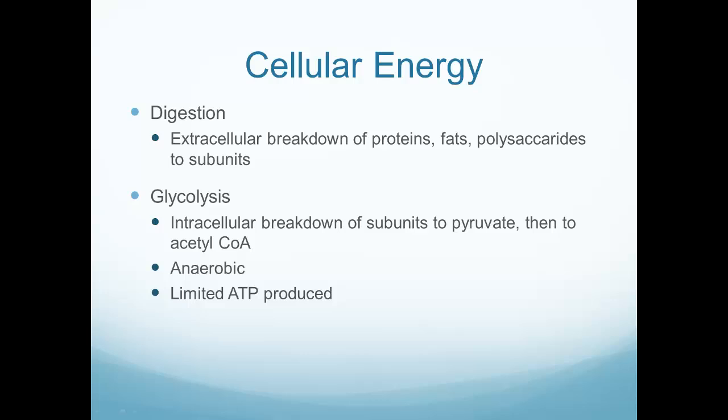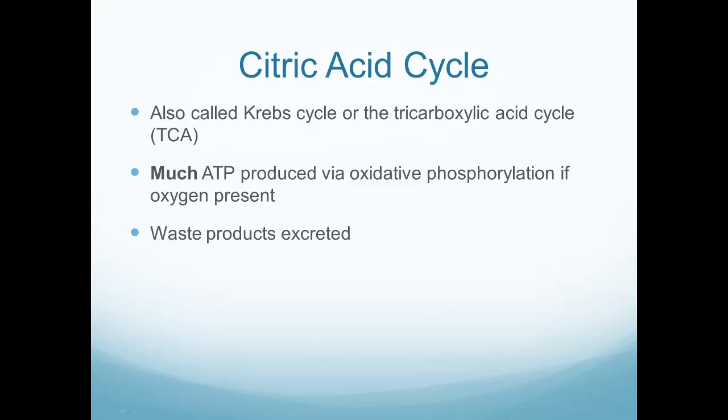Cellular energy is important for digestion — breaking down proteins, fats, and polysaccharides into subunits. It's important for glycolysis, the breaking down of glucose so that we can use it to make more energy. Glycolysis is anaerobic in nature. The citric acid cycle, also called the Krebs cycle, is where we produce the most ATP, and we have to be running it in order to produce enough ATP to run the vital functions of the body.